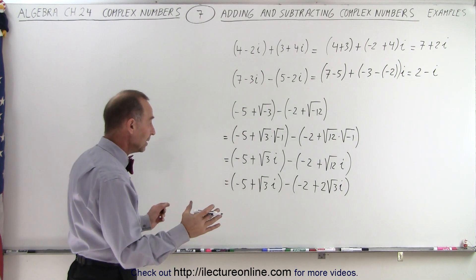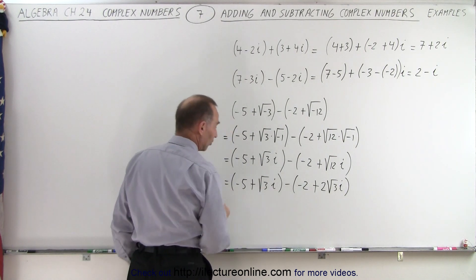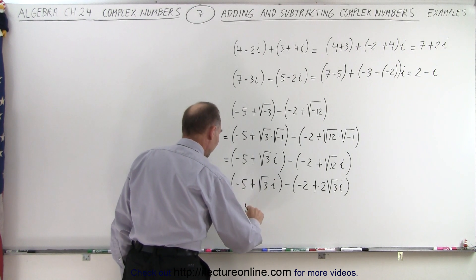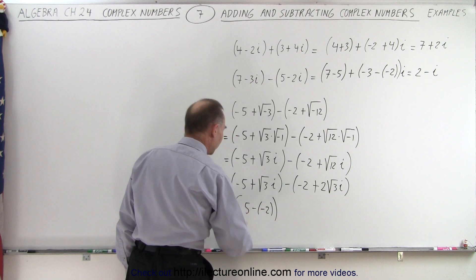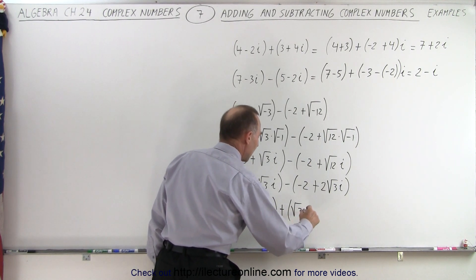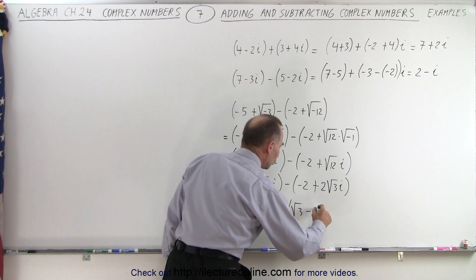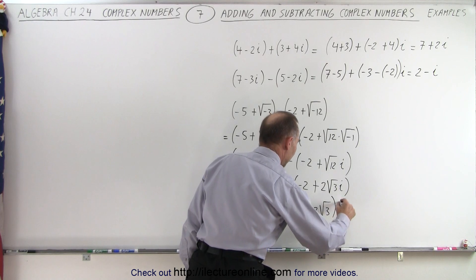And now we can combine the real parts and the imaginary parts. Actually, we're actually subtracting. So this is a minus 5 minus a minus 2. So that's for the real part. Plus we have the square root of 3 minus 2 times the square root of 3 times i.